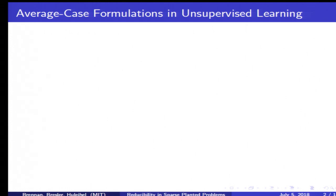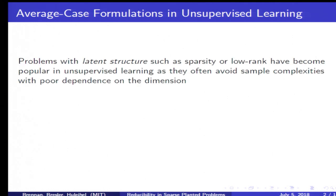First, I'll briefly motivate the problems we'll be looking at. In unsupervised learning, it's become common to assume there's some latent structural assumption on an underlying signal in the problem of interest, such as sparsity or low rank. The reason is that often in high dimensional unsupervised learning problems, you have bad dependence on the dimension in the sample complexity or minimal SNR necessary to solve the task. So it's favorable to make one of these structural assumptions to alleviate this dependence.